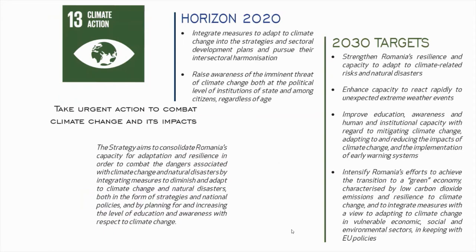Goal No. 13 — Climate Action — aims to take urgent action to combat climate change and its impact. The Strategy aims to consolidate Romania's capacity for adaptation and resilience, in order to combat the dangers associated with climate change and natural disasters, by integrating measures to diminish and adapt to climate change, both in the form of strategies and national policies, and by planning for and increasing the level of education and awareness with respect to climate change.